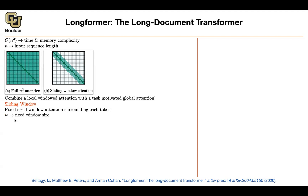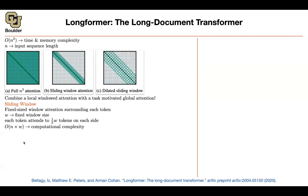You have a fixed-size window W that you spread an attention budget of one within. That window is sliding — as soon as you change your query, the window slides to encompass that query. For instance, you pay attention to one half of the tokens on the left side and one half on the right side, in addition to yourself. This way, the complexity reduces by a factor of W.